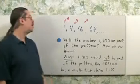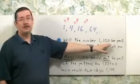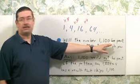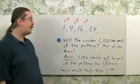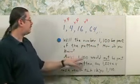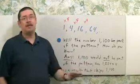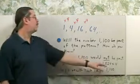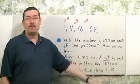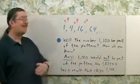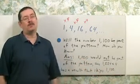Finally, they're asking, will the number 1100 be part of the pattern? How do you know? Well, to answer that, all you really need to write down is 1100 would not be part of the pattern, since 1024 times 4 has a result that skips 1100.